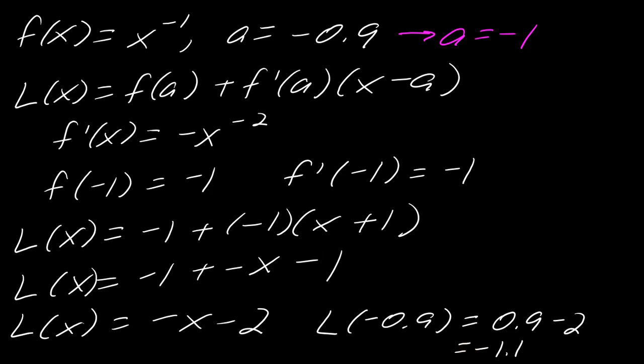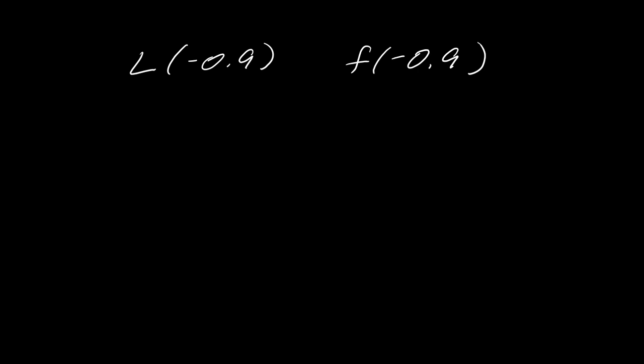Okay, so now I just want to do a quick comparison of the true values. So I've got the linearization that we just did versus the actual functional value. So I'm going to plug in negative 0.9 into both of these. So plugging negative 0.9 into my linearization, this is what we just did. And then plugging negative 0.9 into my function, this is what it would look like.